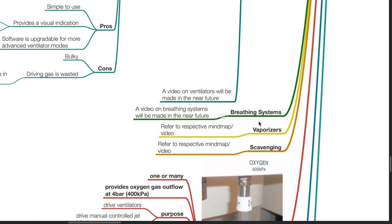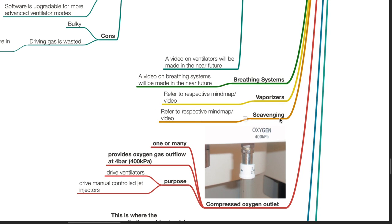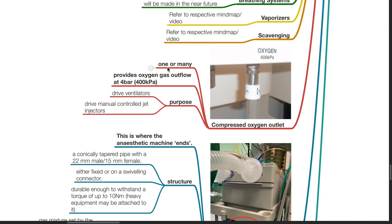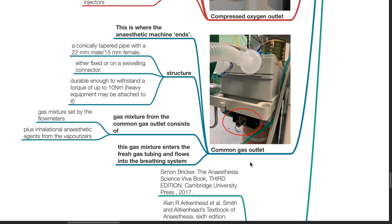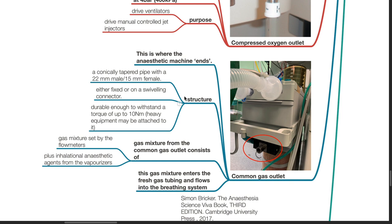A video will be made in the near future for breathing systems. Vaporizer and scavenging will be discussed later. Compressed oxygen outlet: there may be one or many, and it provides oxygen gas outflow at 4 bar. Its purpose is to drive ventilators and drive manually controlled jet injectors. Common gas outlet: this is where the anesthetic machine ends. It is a conically tapered pipe with a 22mm male and 15mm female connection. It is either fixed or on a swiveling connector and is durable enough to withstand a torque of up to 10 Nm. Gas mixture from the common gas outlet consists of the gas mixture set by the flow meter plus inhalational anesthetic agents from the vaporizers. This gas mixture enters the fresh gas tubing and flows into the breathing system.